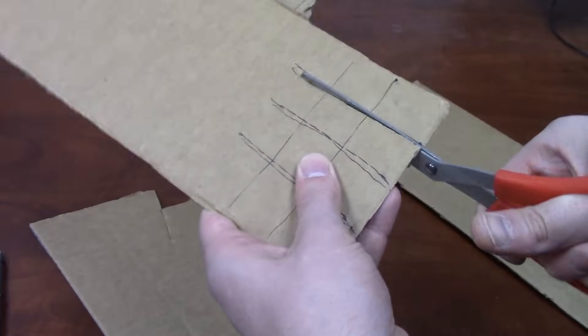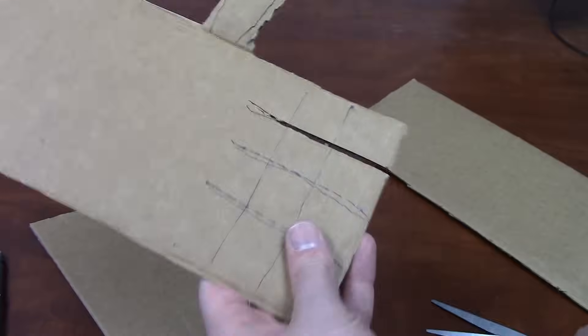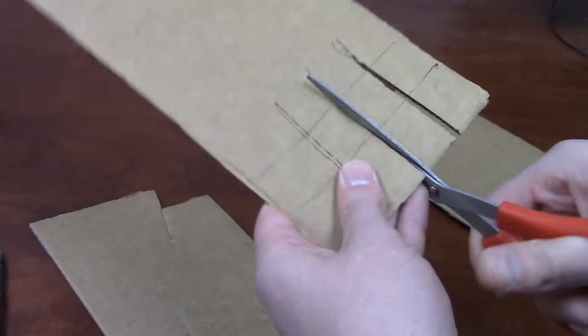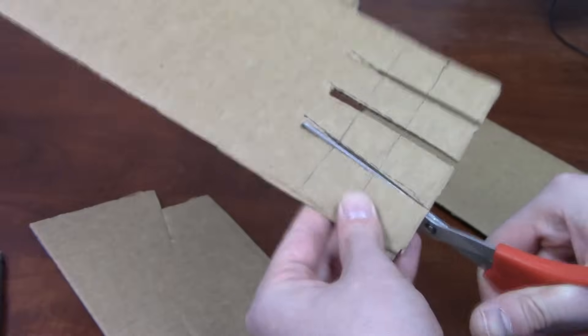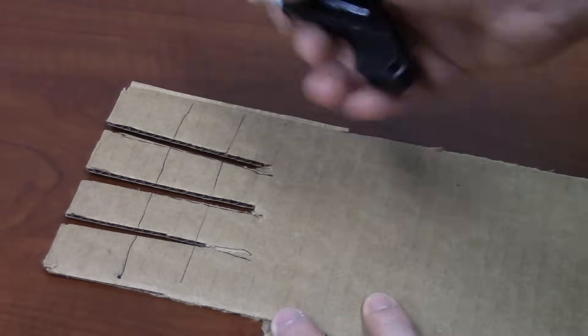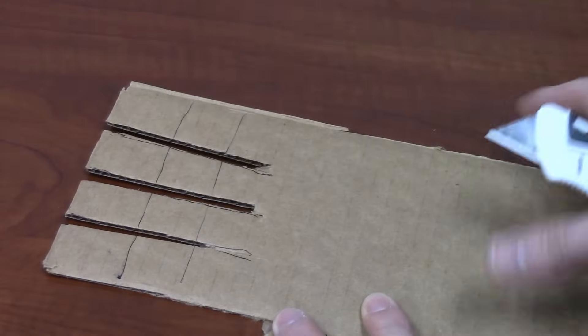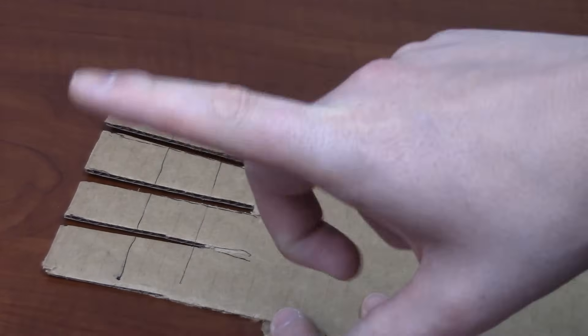Okay, now we're going to cut the fingers. What we're going to do is we're actually going to cut into the first layer of the cardboard so we can make little joints.